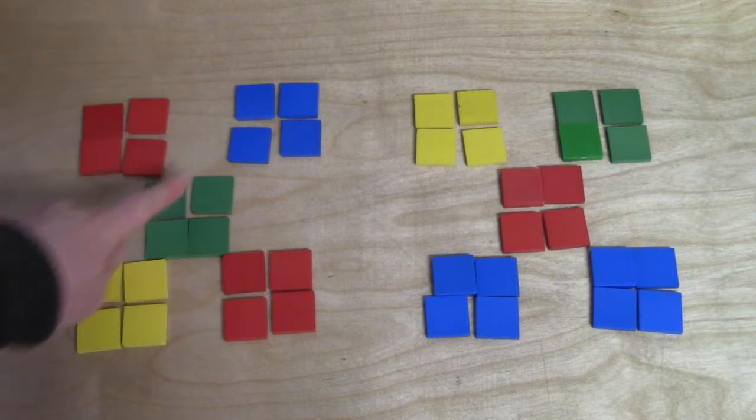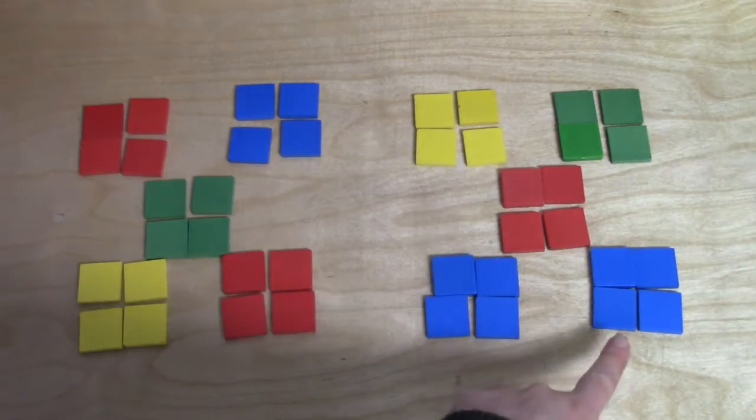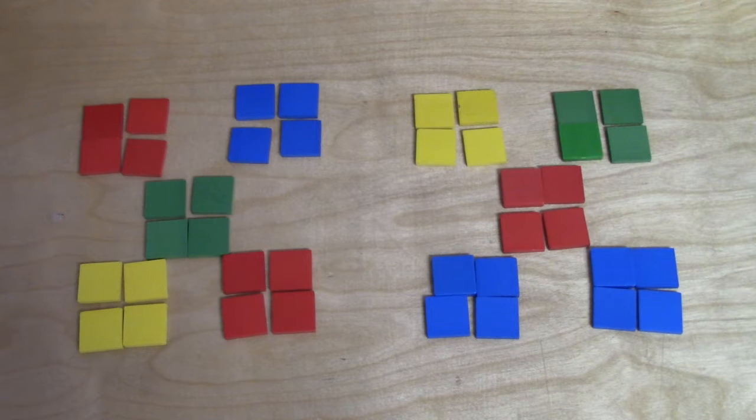Let's see how many groups we have. 1, 2, 3, 4, 5, 6, 7, 8, 9, 10. We have 10 groups of four.